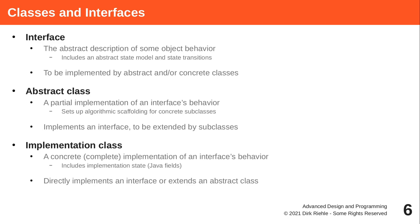In an abstract class, you may find combined methods and in particular template methods that implement some complex algorithm, but delegate smaller steps to other combined or even primitive methods — some of which will only be provided by subclasses. An implementation class is a concrete subclass, typically of an abstract class, which completely implements all required methods to allow for instantiation.